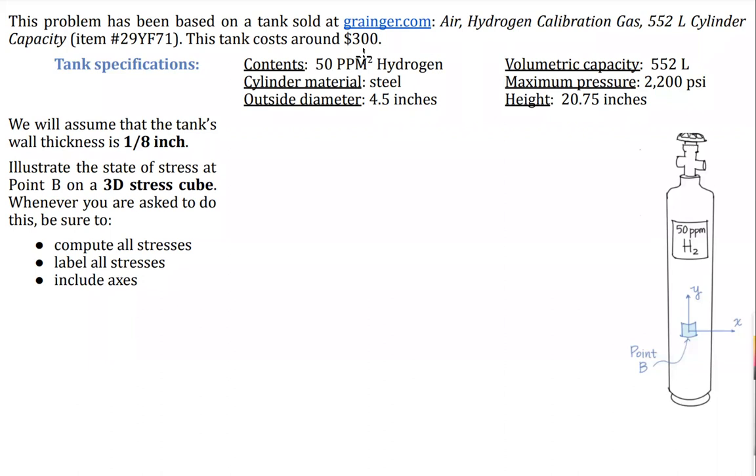This tank contains hydrogen gas, 50 parts per million hydrogen gas. It's made of steel. It has an outside diameter of 4.5 inches. The volumetric capacity is stated. The maximum pressure is going to be important for us, 2200 psi or 2.2 ksi. That would be the gauge pressure. And the height of the tank is also given. On this company's website the thickness is not given, so we'll just assume that it is 1/8th inch thick.